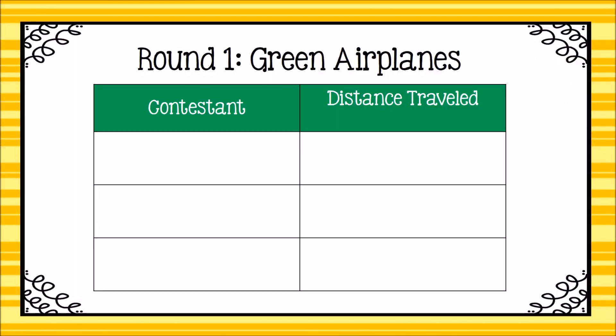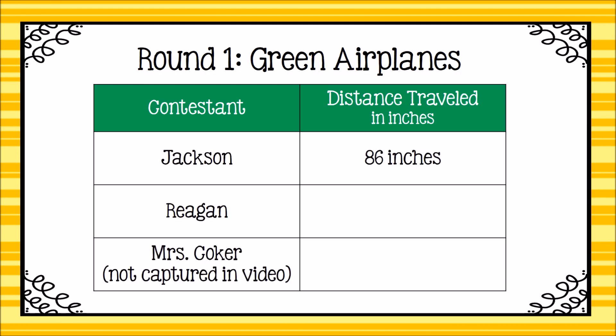Here are the round one distances traveled. Originally our plan was to measure the distance traveled using yards or feet. Once we saw just how closely the airplanes landed to each other, we realized we needed a more precise or accurate unit of measure. Therefore, we decided to measure in inches. Jackson's plane traveled 86 inches, Reagan's traveled 91 inches, and Miss Coker's plane traveled 54 inches.